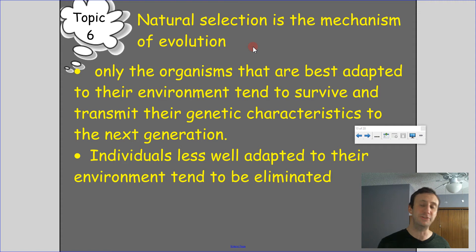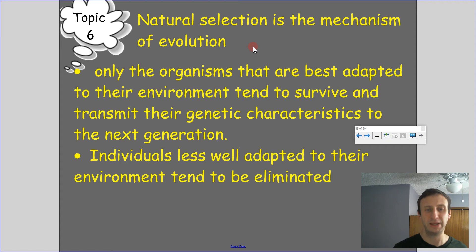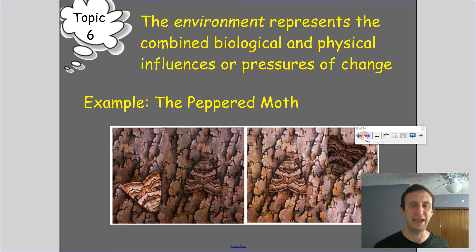Natural selection is basically survival of the fittest. The thing most adapted to survive will survive, reproduce, and pass on its genetic code. If it's not adapted to survive, it dies, doesn't reproduce, and its genes do not go on to the next generation. Nature is cruel — individuals less well adapted to their environment tend to be eliminated, and their genetic code dies with them.